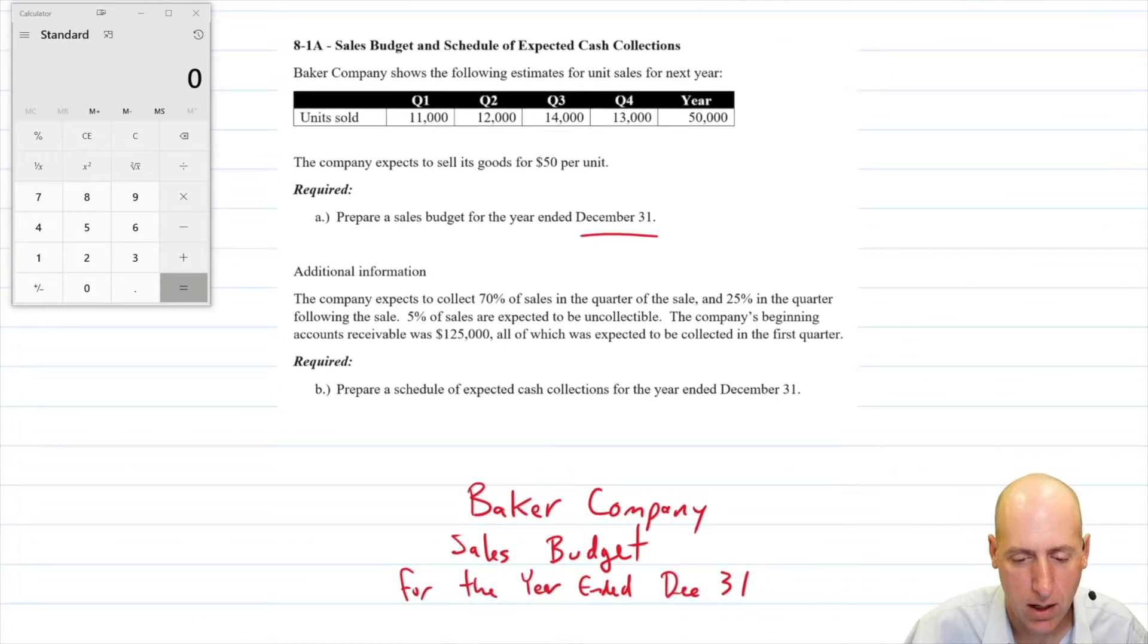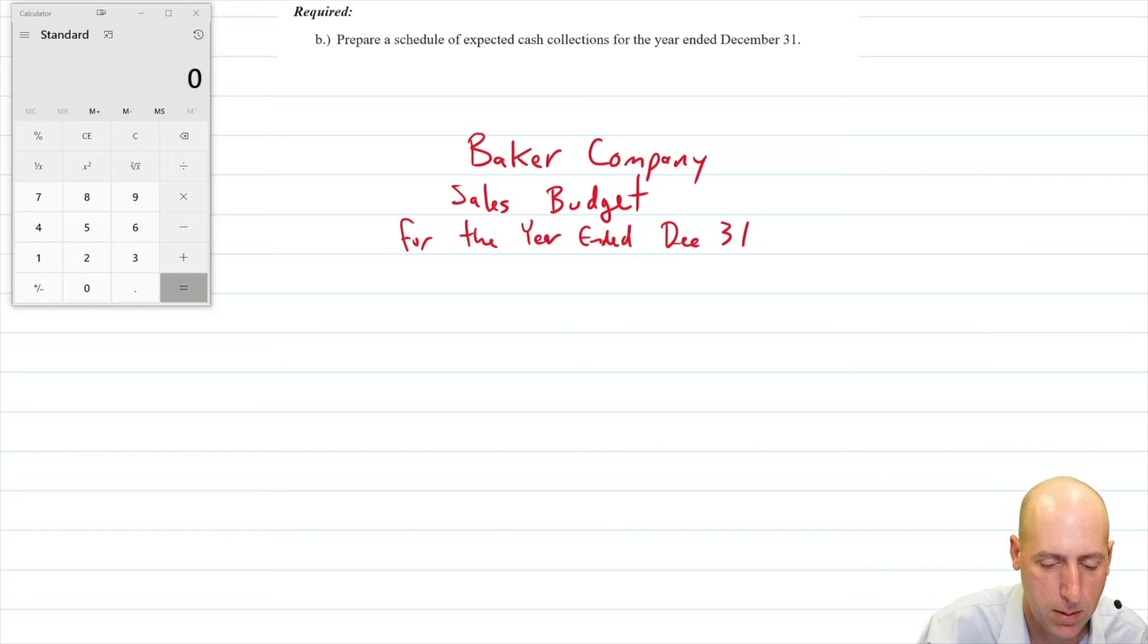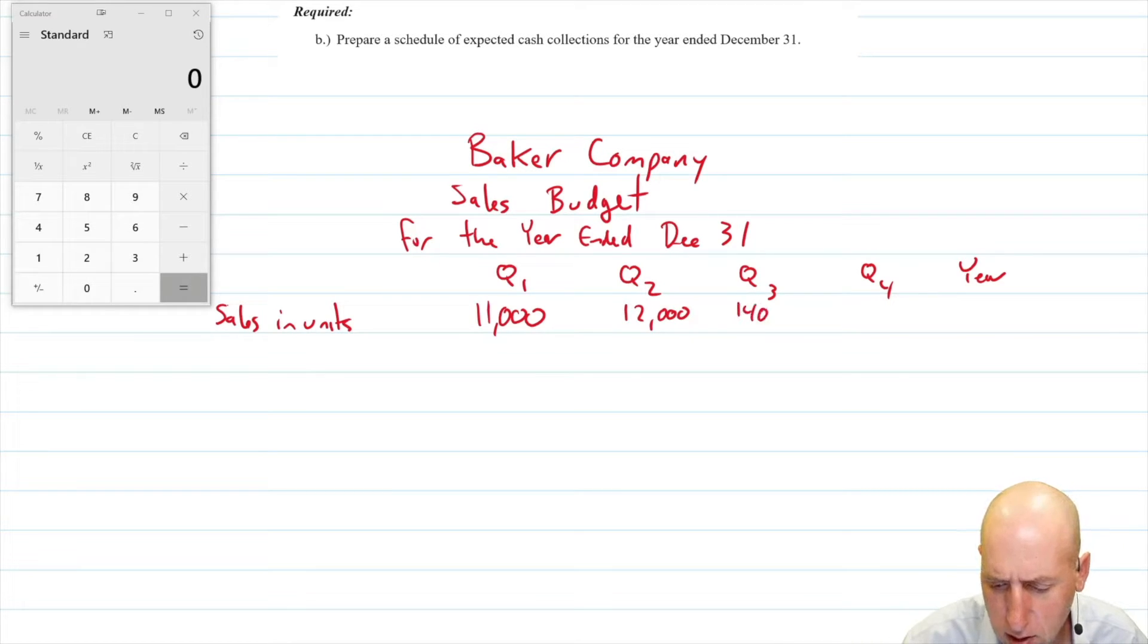So we've got a nice title. Now, all we do is say, how many dollars are we expecting to sell each quarter? So I'm going to take my units sold here, my sales in units. And I got Q1, Q2, Q3, Q4, and total. And I'm just going to list them out. So 11,000, I guess instead of total, we'll call the column for the year, 11,000, 12,000, 14,000, 13,000. Adding those together, 25 and 25, it's 50,000, we're planning to sell 50,000 units.